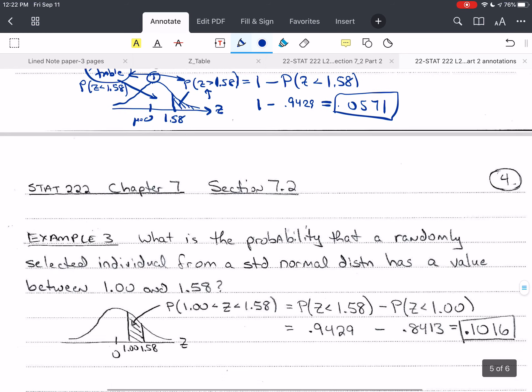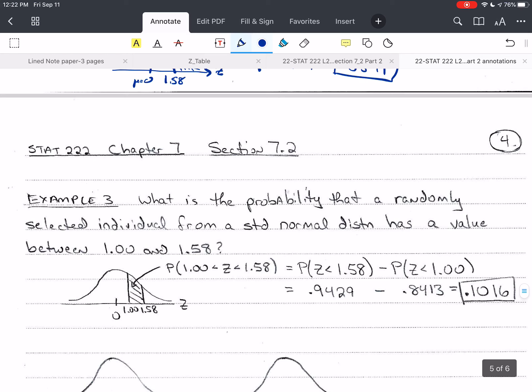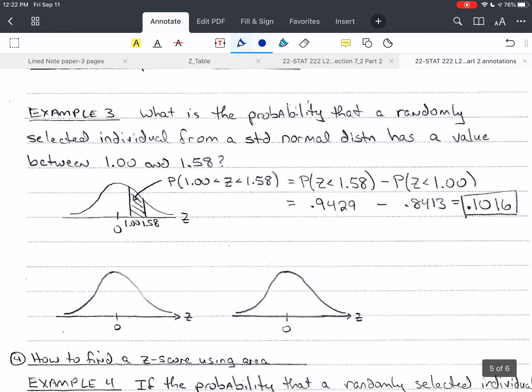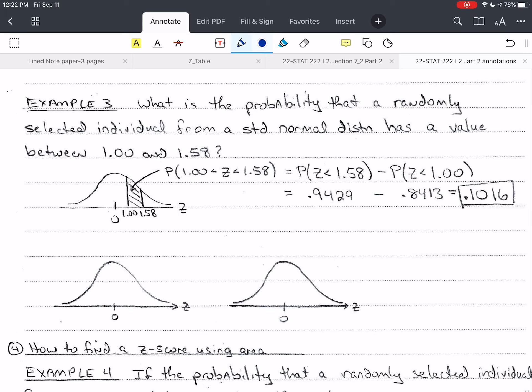Let's do another one. But now, instead of doing greater than or less than, we're going to do between. So again, we don't have between in our table. That would be a very difficult table to do. So all we have is less than. So what we're going to do is, and here I've worded the problem differently again. What is the probability that a randomly selected individual from a standard normal distribution has a value between 1.00 and 1.58? So in order to get this, we have to be clever. So I'm going to start with the 1.58 here.